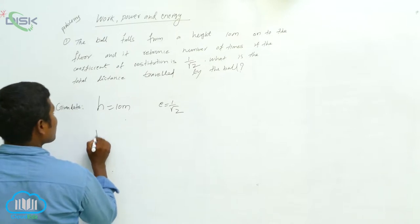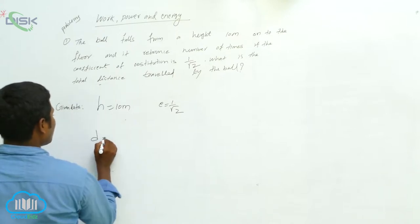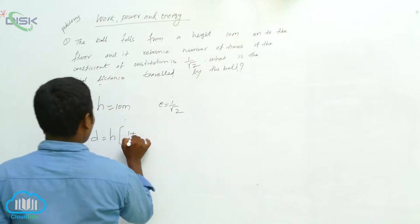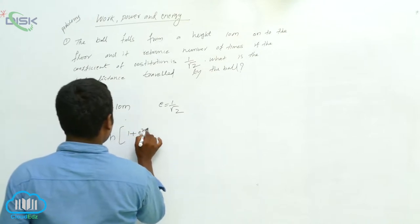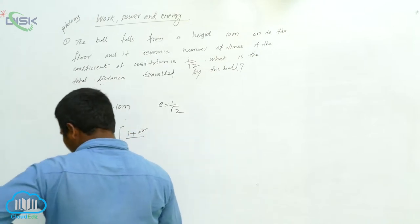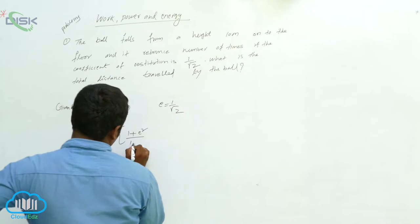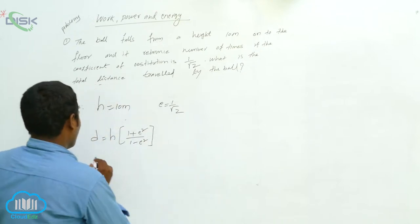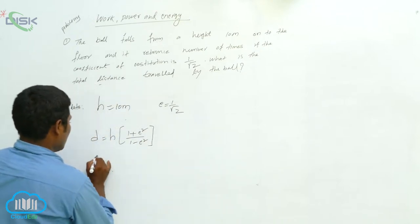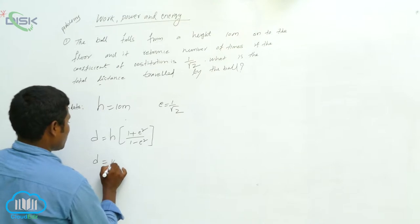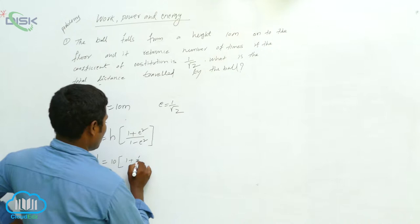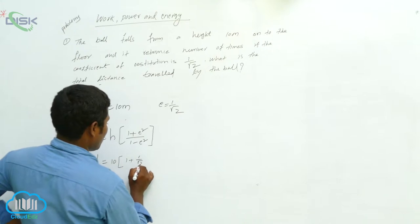The formula for total distance is D = h times (1 + e²) divided by (1 - e²). Substituting: h = 10 meters and e = 1 by root 2.